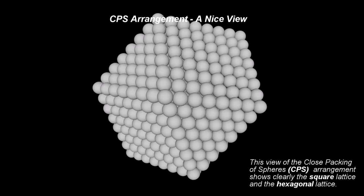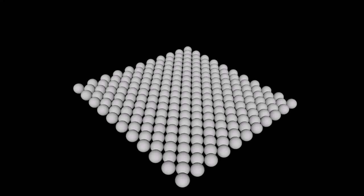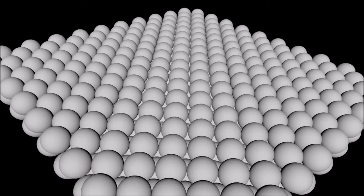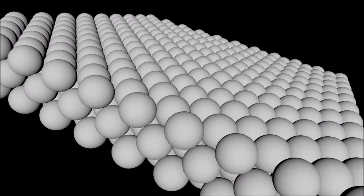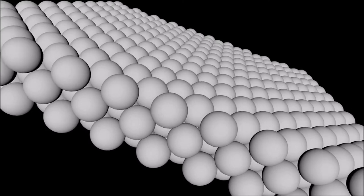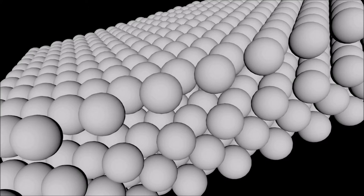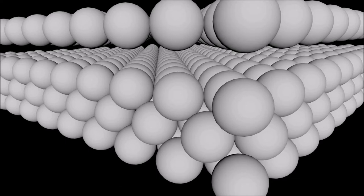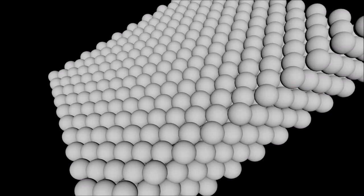Part 4: Square Patterns, Vertical Planes, Periodicity. As seen already, one way of generating the close packing of spheres arrangement is to stack parallel square planes on top of each other. For this to be possible, a translation is required between planes. The balls of any plane shall fit exactly in the nests formed by the cluster of 4 balls from the plane below. Every second plane is translated relative to the original location.